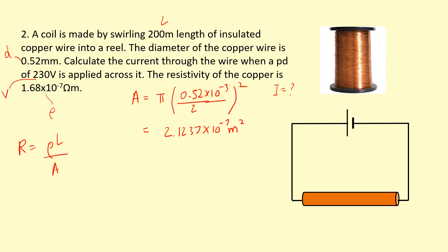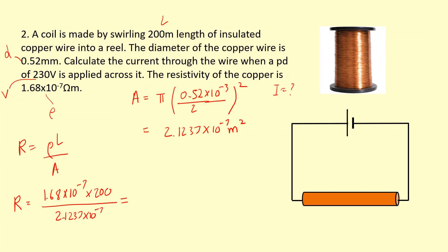Calculating the area gives 2.1237 × 10⁻⁷ meters squared. Putting that back into the resistance equation: R = (1.68 × 10⁻⁷ × 200) / (2.1237 × 10⁻⁷), which gives a resistance of 158.2 ohms.